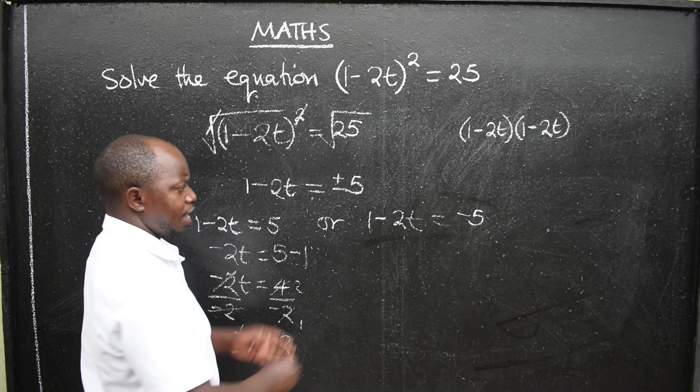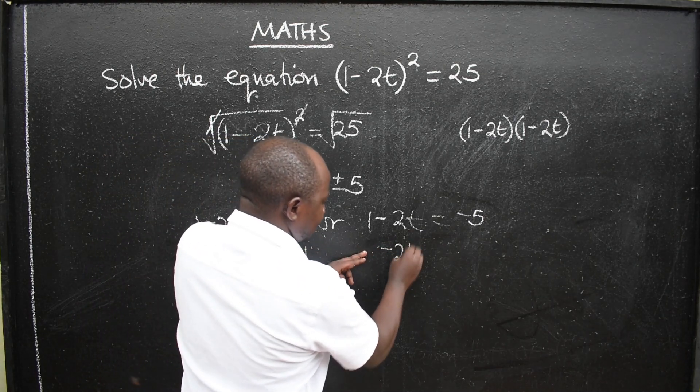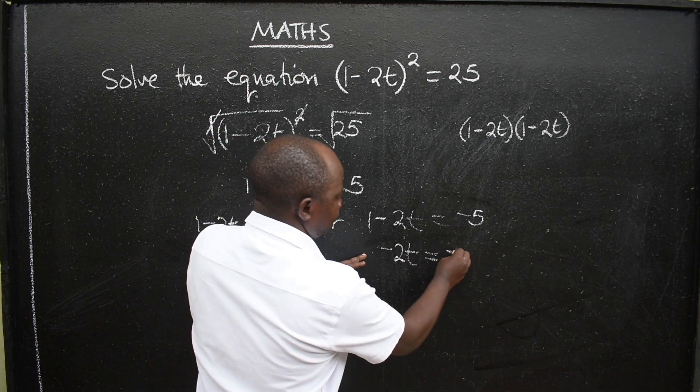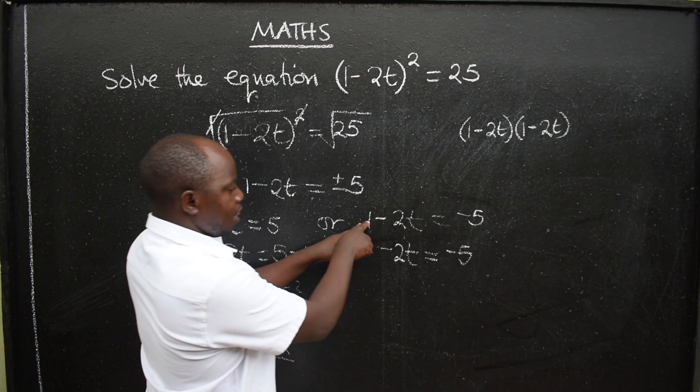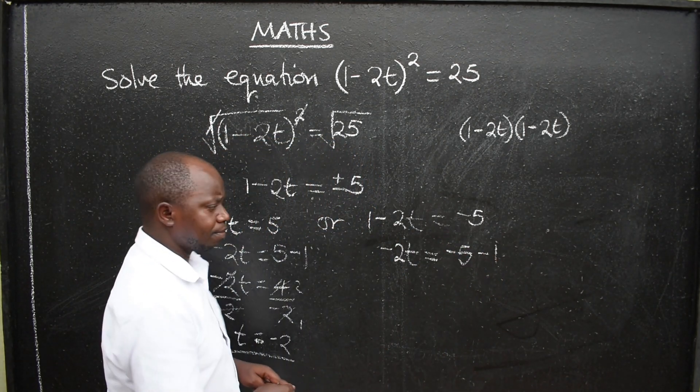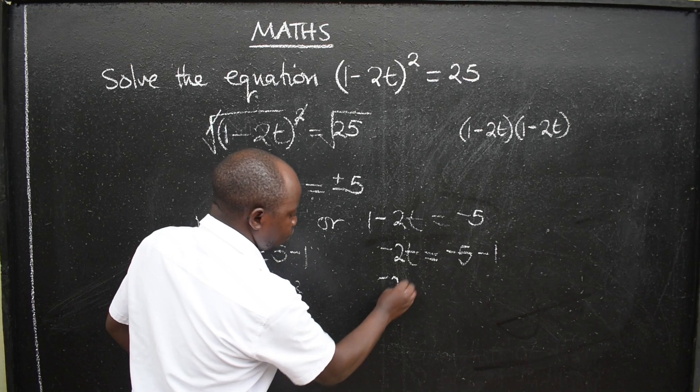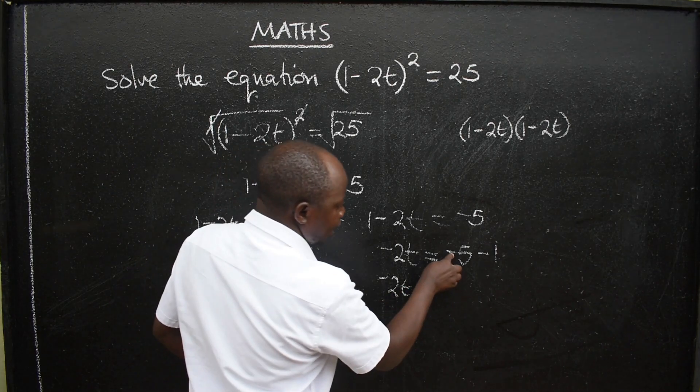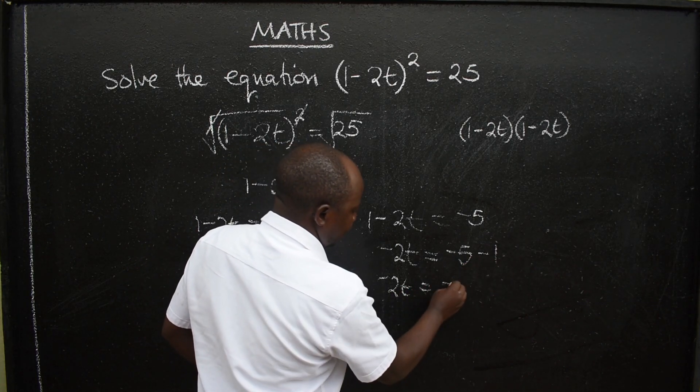On the other side, -2t will be equal to -5. This 1 will be -1 on the other side. Then we are going to have -2t will be equal to -5, -1 is -6.